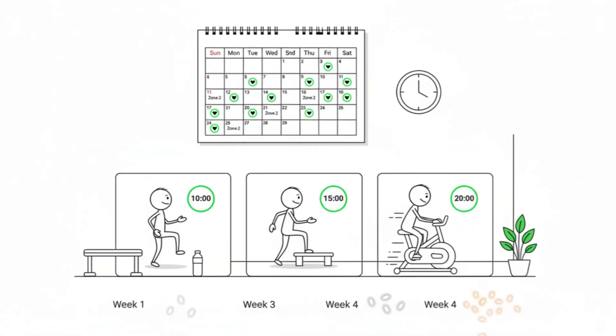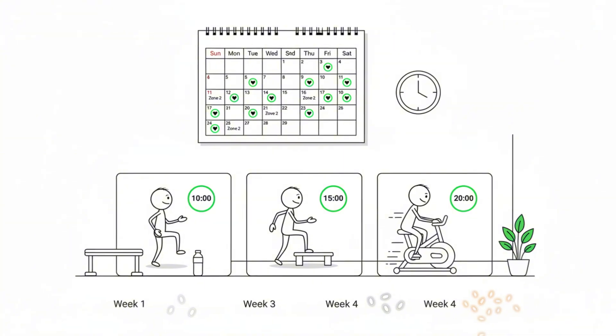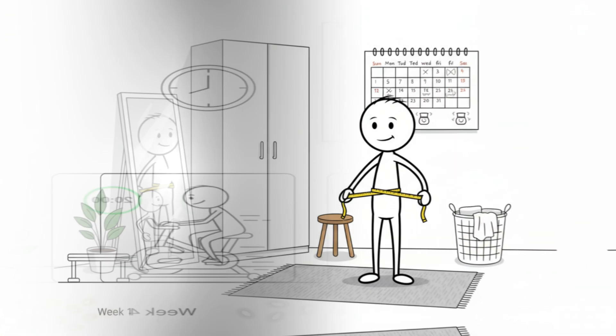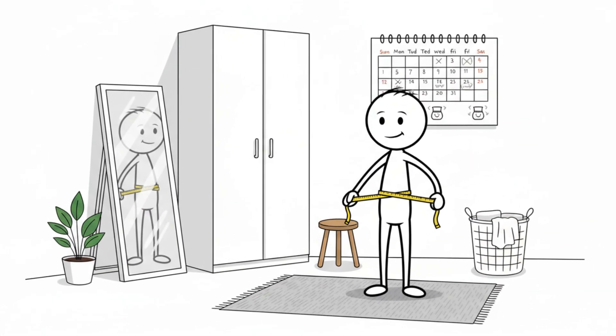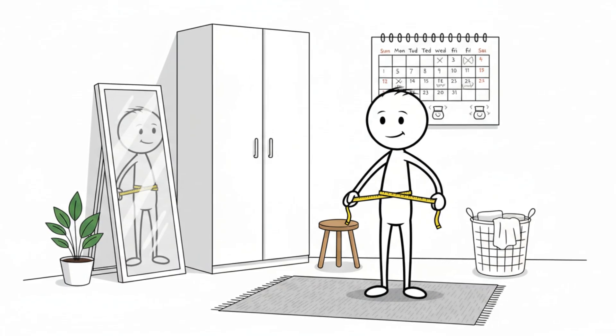Visceral fat doesn't change overnight, so tracking progress requires patience and the right indicators. One reliable method is monitoring waist circumference. Researchers often use this measurement because reductions around the abdomen correlate strongly with decreases in visceral fat.